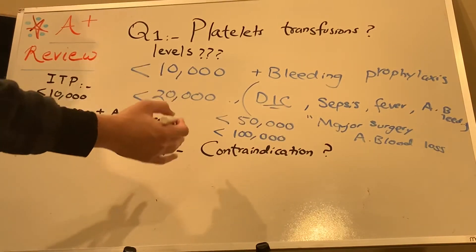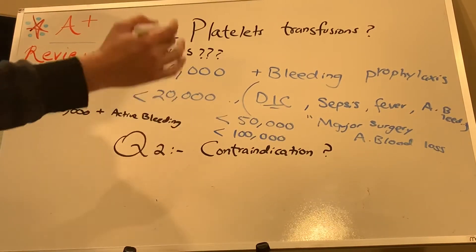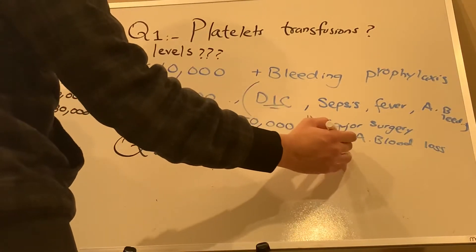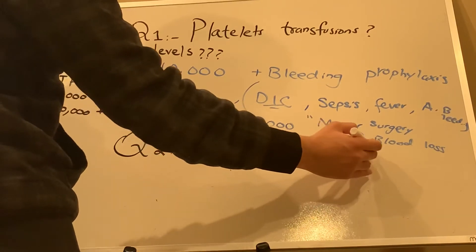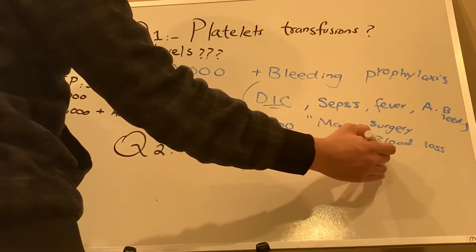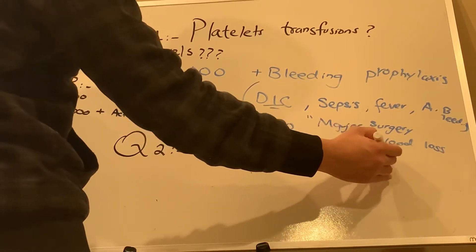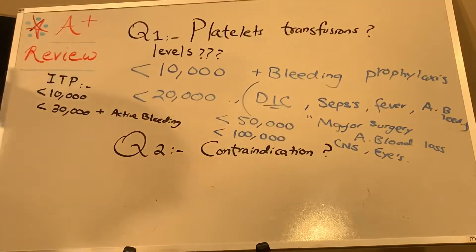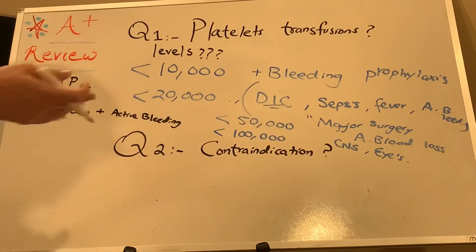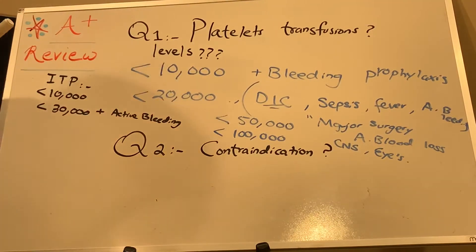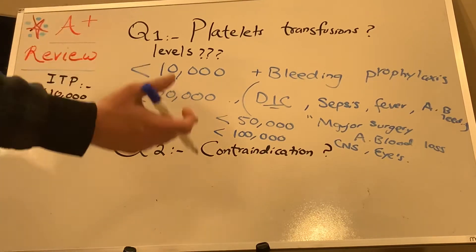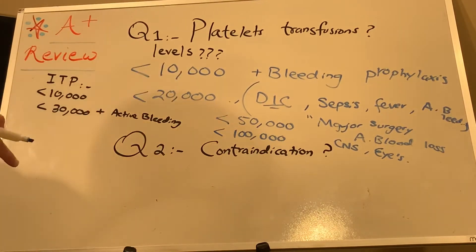Less than 100,000 is when you have CNS symptoms — anything involving the CNS or the eyes. So, bleeding from the eyes, CNS hemorrhage — as we know that includes hemorrhagic stroke — this is the level.